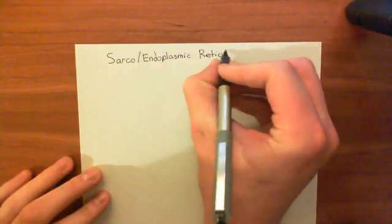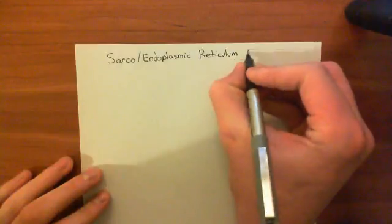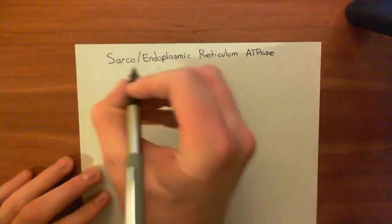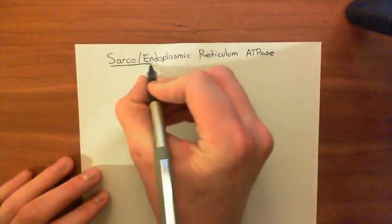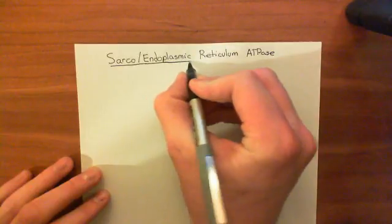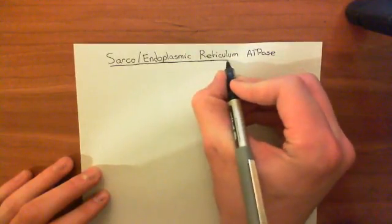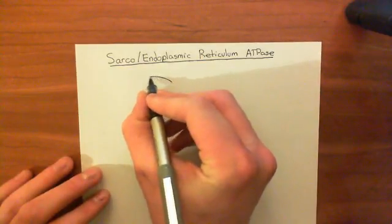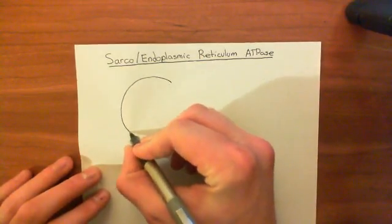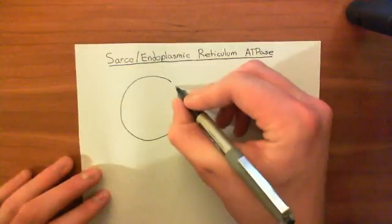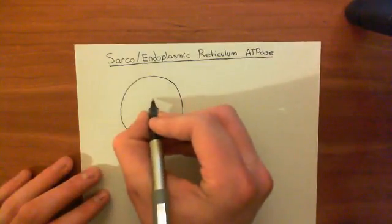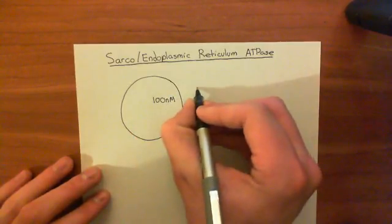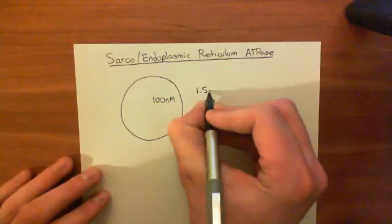I've talked in previous videos about how calcium is kept very, very low within the cytoplasm, generally around a concentration of 100 nanomolar, whereas calcium outside the cell is much, much higher. The intracellular concentration of calcium is approximately 100 nanomolar, whereas the extracellular concentration of calcium is usually around 1.5 millimolar.